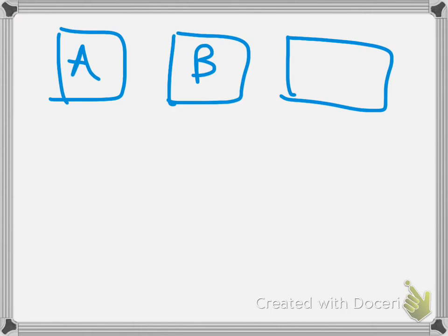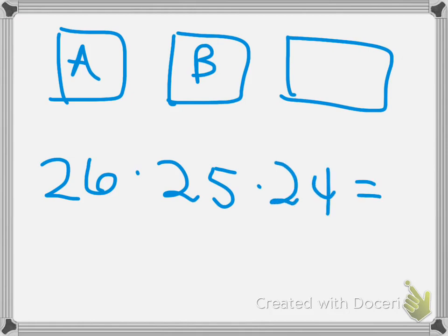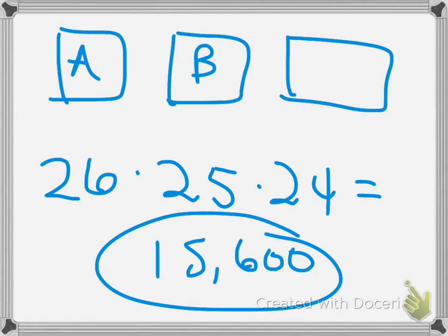So this is not going to be a factorial. We're not going to do 26 factorial because we're not going to go all the way down to one. We're only going to do 26, then 25, then 24. We'll get our calculator out and find out there are 15,600 different options for license plates if I use just three of them. Could you imagine what would happen if I did one more? If I did one more, I'd take that number times 23. Wow. Yeah.